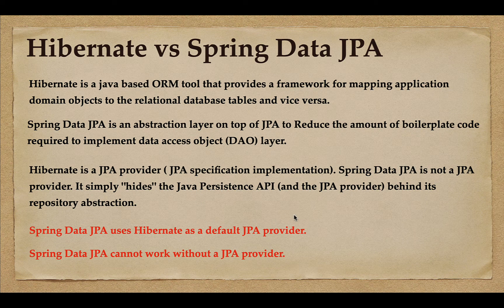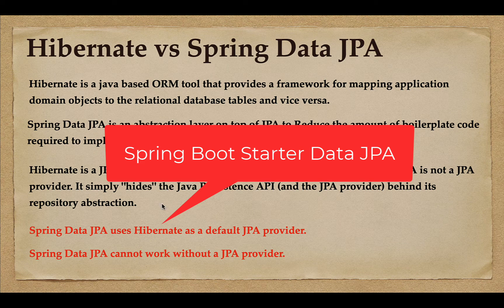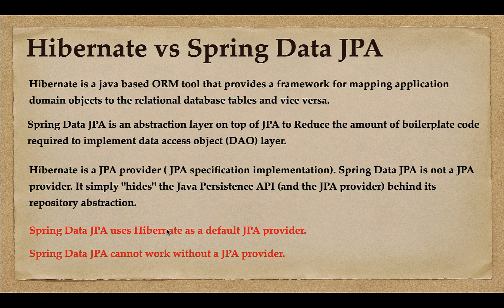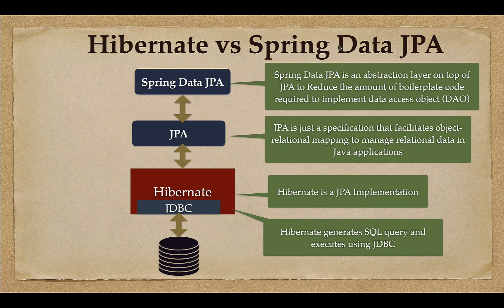Spring Data JPA uses Hibernate as its default JPA provider. Spring Boot's starter dependency for Spring Data JPA internally uses Hibernate as the default JPA provider. Spring Data JPA cannot work without a JPA provider. There are multiple JPA providers available — for example, Hibernate, EclipseLink, TopLink, and MyBatis — and you must provide one of them in order to work with Spring Data JPA.